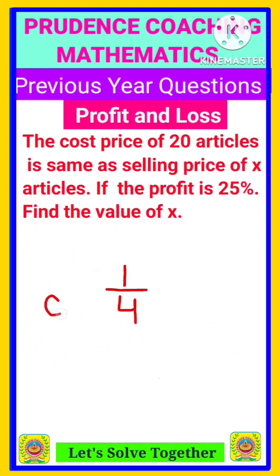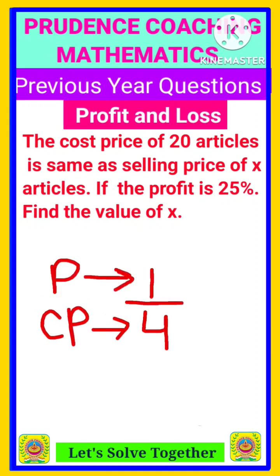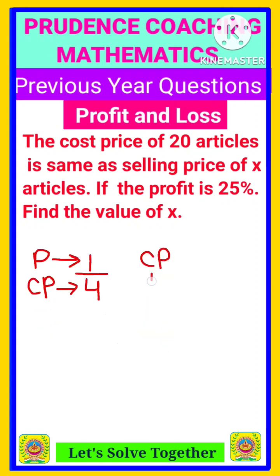What is this 1 by 4? Cost price, that is 4 here. That means base will be always cost price. And here it is said profit, that means this profit will be the numerator. So if you buy an article for rupees 4 and if you get profit of 1 rupee, that means SP, that is the selling price, you are selling at 4 plus 1, 5 rupees.